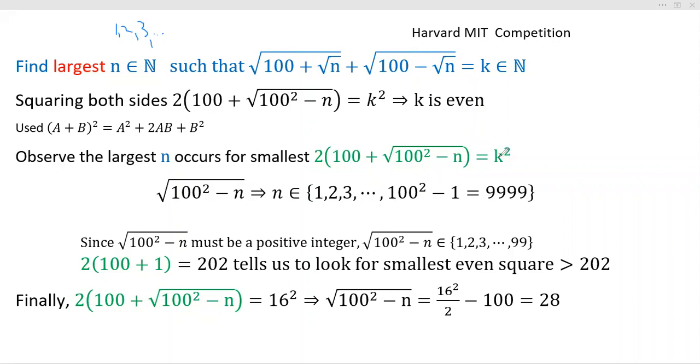This gives us quite a bit of information. It tells us first of all that k is an even number, which turns out to be rather useful.